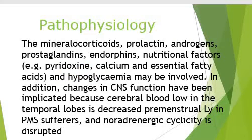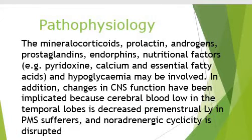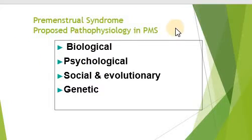There may also be hypoglycemia. Regarding CNS involvement, it may be basically due to low cerebral blood flow, especially in the temporal lobes, which usually decrease premenstrually. It is important to remember that not all hormones are responsible for induction of PMS — different etiological factors apply to different women and according to different emotional circumstances. Family history may predispose a patient to PMS, suggesting biological, psychological, social, evolutionary, and genetic factors in pathophysiology.